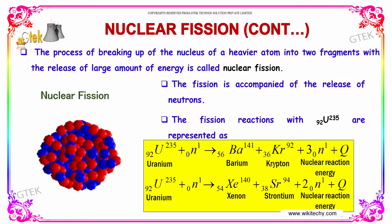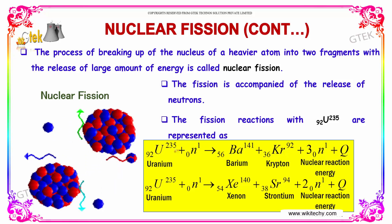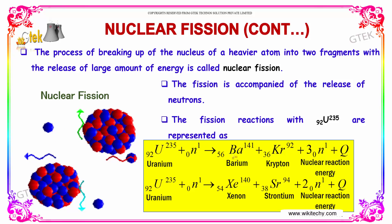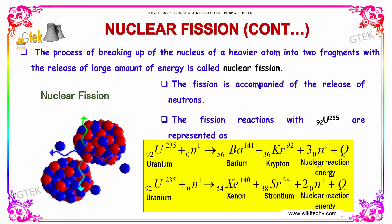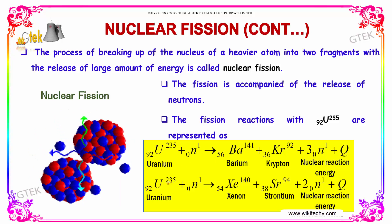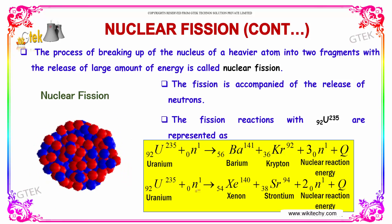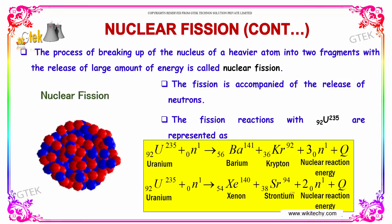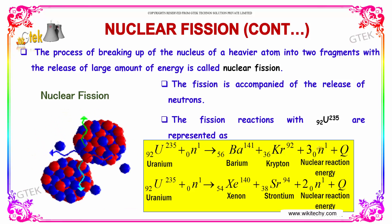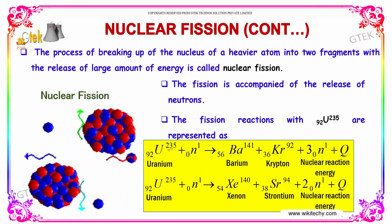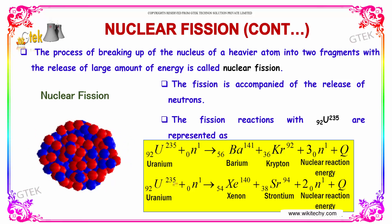The fission reaction is shown here: Uranium-235 with atomic number 92, bombarded with a neutron, gives barium and krypton with release of nuclear reaction energy. In another reaction, Uranium-235 with a neutron may give xenon and strontium with nuclear reaction energy — releasing two neutrons in one case and three neutrons in another. These are the nuclear fission reactions of Uranium-235.